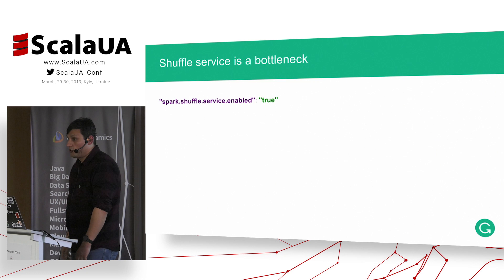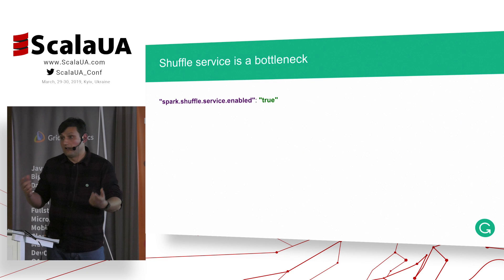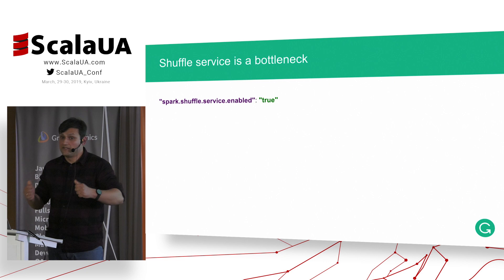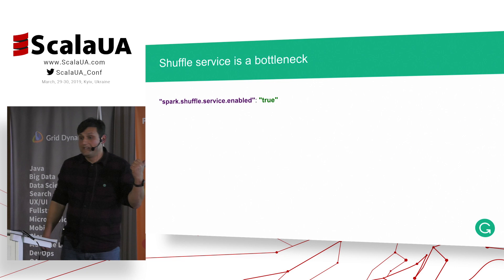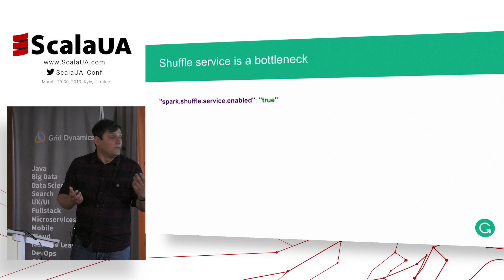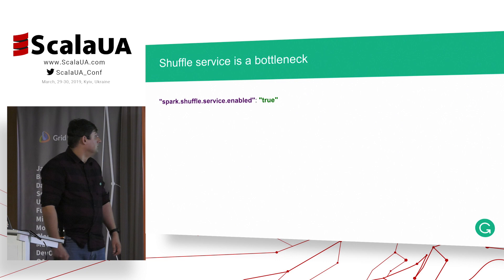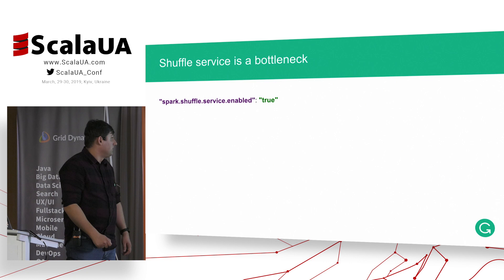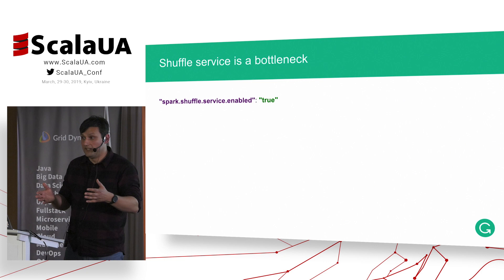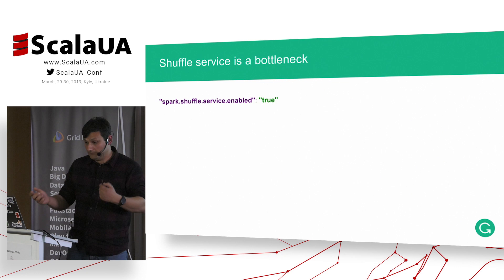Another issue is Spark shuffle servers. When you have hundreds of nodes and hundreds of executors shuffling data — because n-gram calculation is a shuffle-intensive operation by nature, you can't do better than shuffling the data — all you can do is configure Spark to do it well. The first and most trivial thing is to enable external shuffle servers, which means shuffle servers run in a separate JVM instance, different from the executor, making this more reliable.